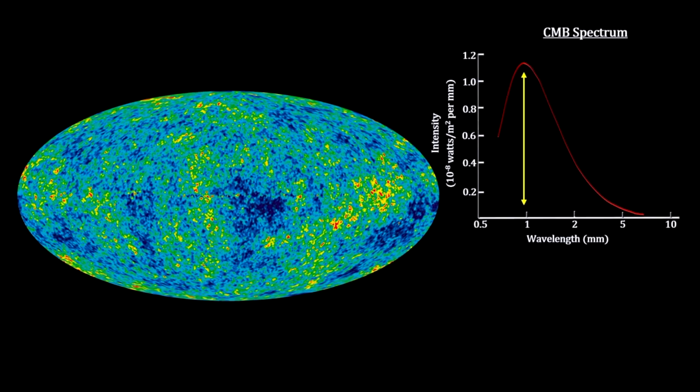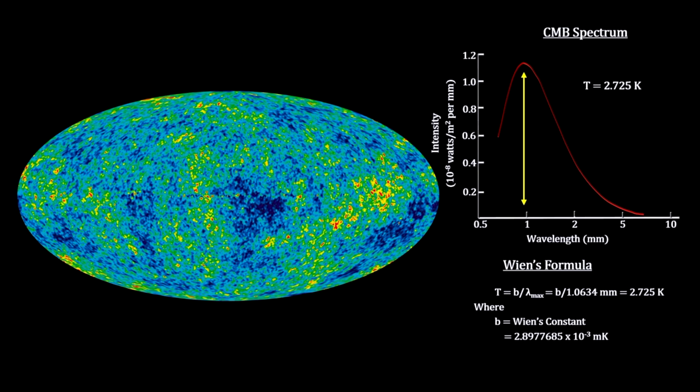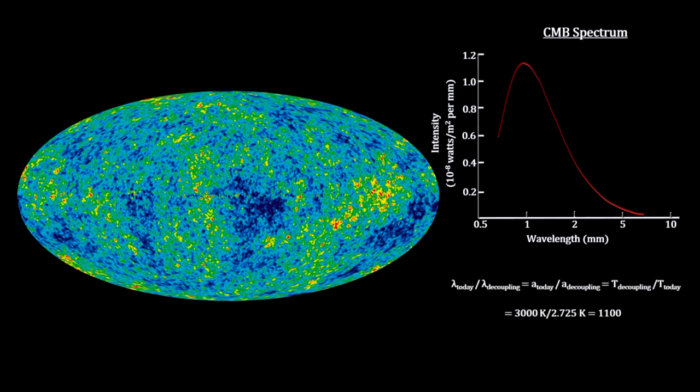The key observation is that the light fits the black body radiation curve perfectly. This gives us the temperature of the radiation today. It is 2.725 degrees. We know that at decoupling it was 3000 degrees. So the temperature has been reduced by a factor of 1100. So the universe has expanded by a factor of 1100 times since decoupling.